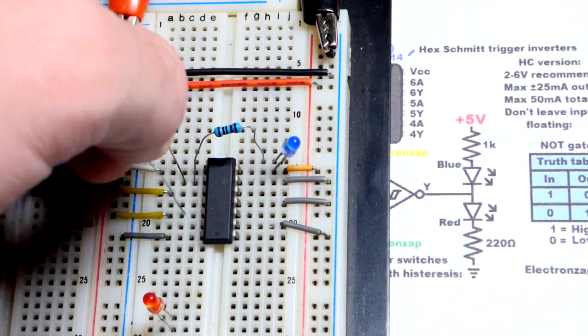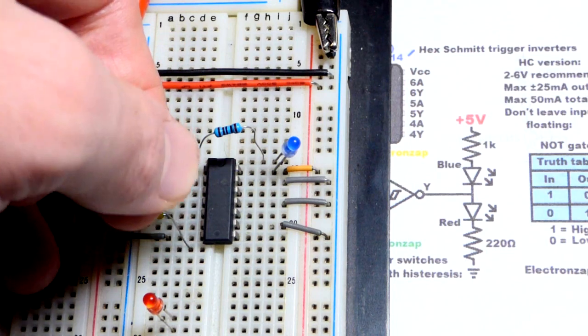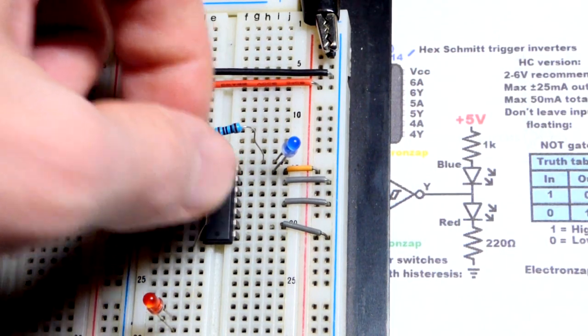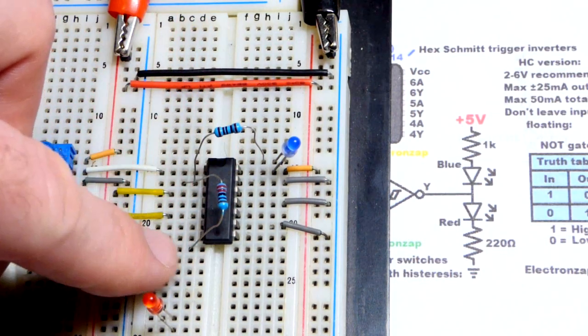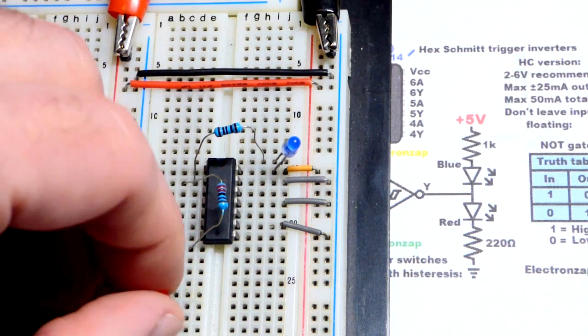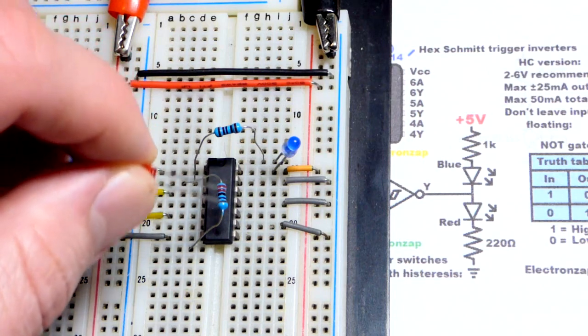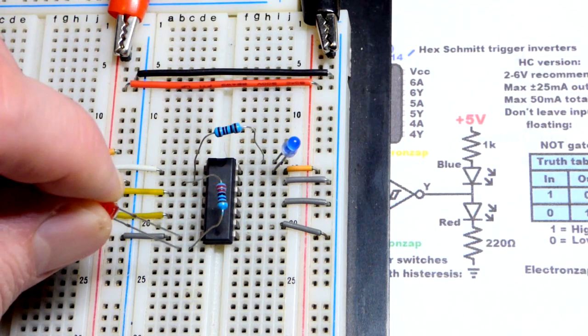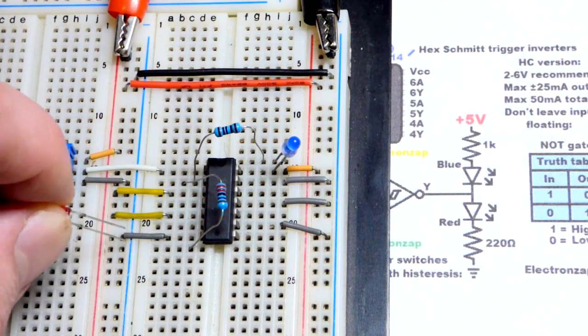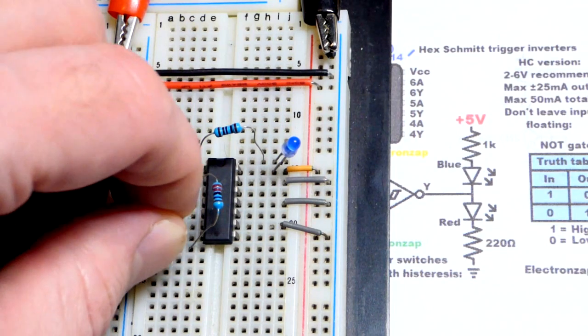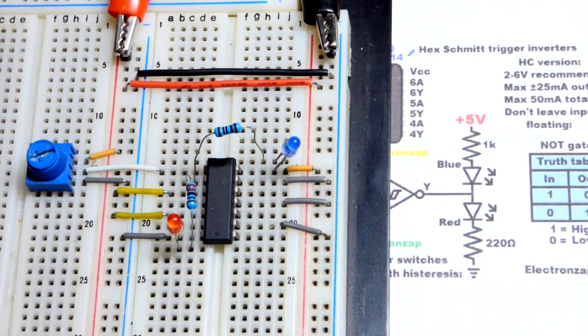And we're going to take 220 ohm resistor there. Go one spot away from the ground jumper there. But not to the output of that one. So down. And so that's going to be more positive when the red LED lights up. So long lead the anode to the resistor. Short lead the cathode to that gray jumper right there. And that is it. We are done.